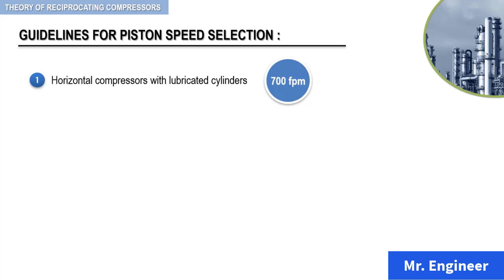For horizontal compressors with non-lubricated cylinders, a lower speed must be considered to keep the cylinder and the piston ring wear down. 600 feet per minute is an acceptable guideline.